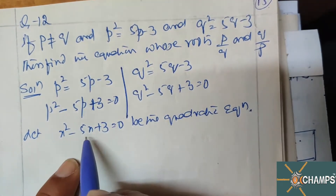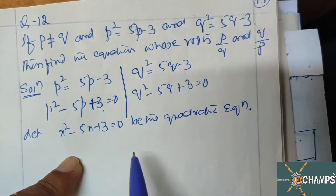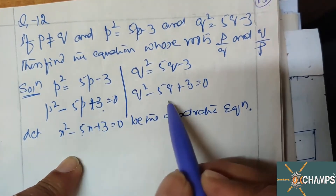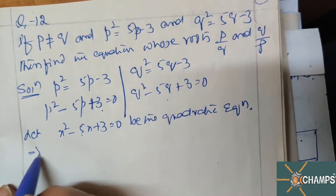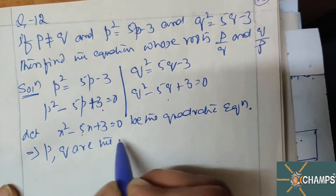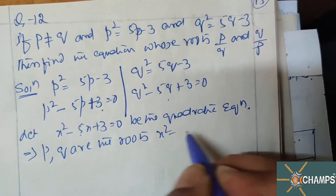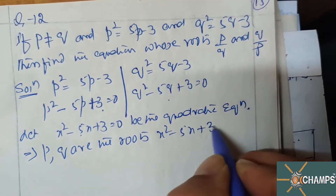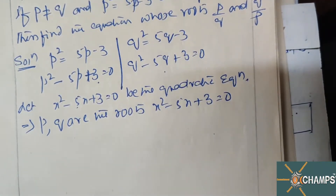In this equation, if x is replaced with p, we get the first equation; when x is replaced with q, we get the second equation. This implies p and q are the roots of x² - 5x + 3 = 0. Whenever we know the roots, we can find the sum and product of the roots.